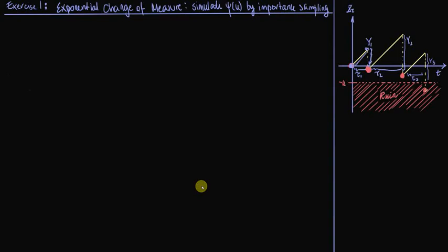This exercise will be about importance sampling and how to use importance sampling with an exponential change of measure to simulate the probability of ruin.